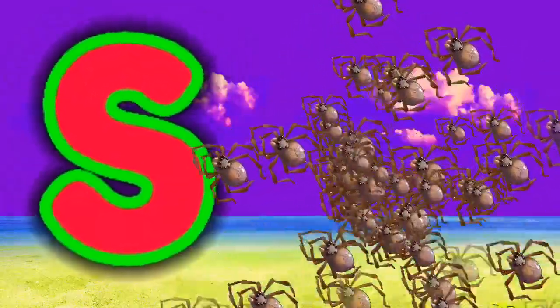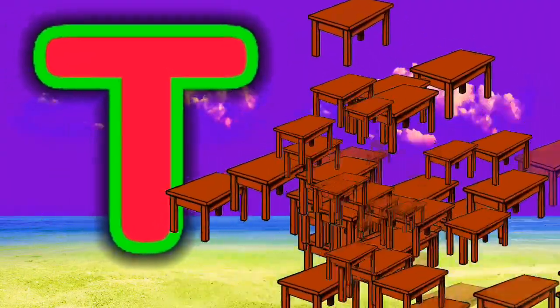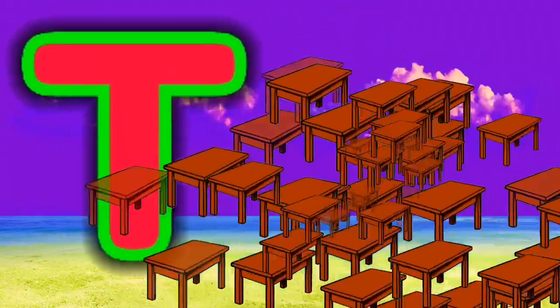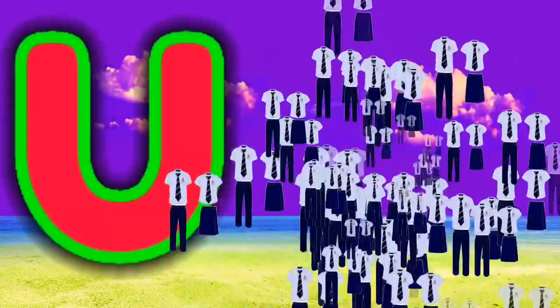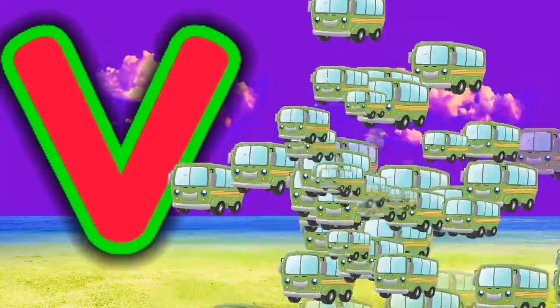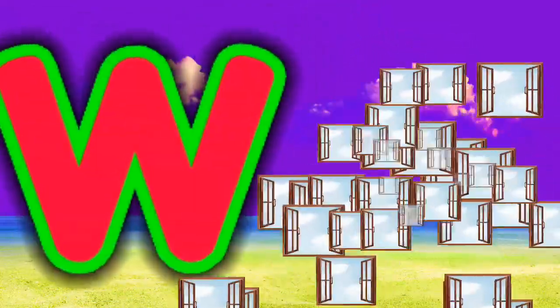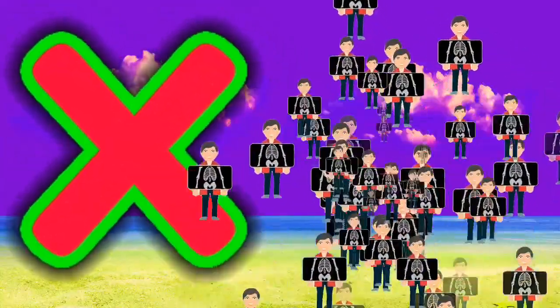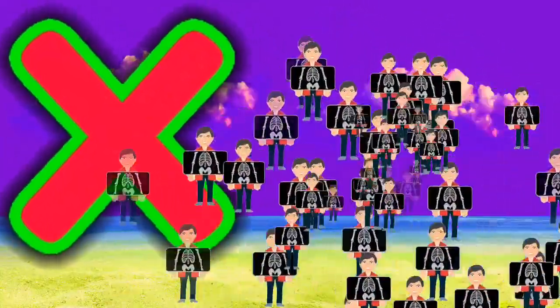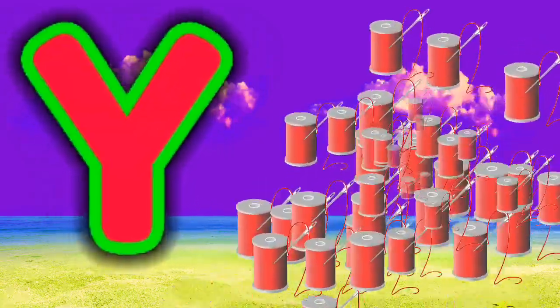S for spider, T for table, U for uniform, V for van, W for window, X for x-ray, Y for yarn.